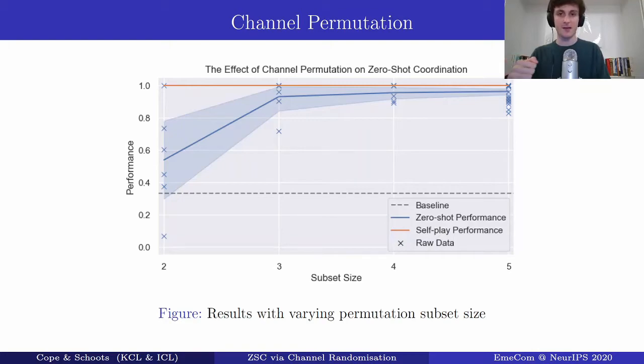Now we also investigate permuting only a subset of the communication symbols. So for example on the left here we see that we will randomly pick two symbols and for an episode permute those whereas on the right we permute all of them. For our environment we only have five symbols here and we see that the blue line